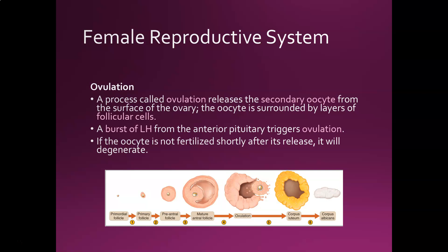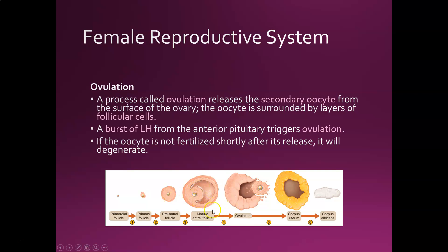A process called ovulation releases the secondary oocyte — what we refer to as the egg — which can be fertilized from the surface of the ovary. It's surrounded by layers of follicular cells. Primordial follicles develop in utero when a baby girl is inside her mom's uterus. You have a bunch of primary follicles, and then at puberty we start maturing these follicles such that every 28 days an egg is released. The process of releasing that secondary oocyte from the follicle is called ovulation. What's left behind in the ovary turns into the corpus luteum and then the corpus albicans.